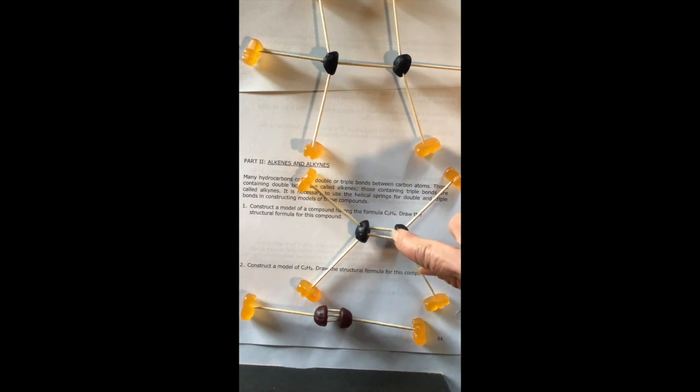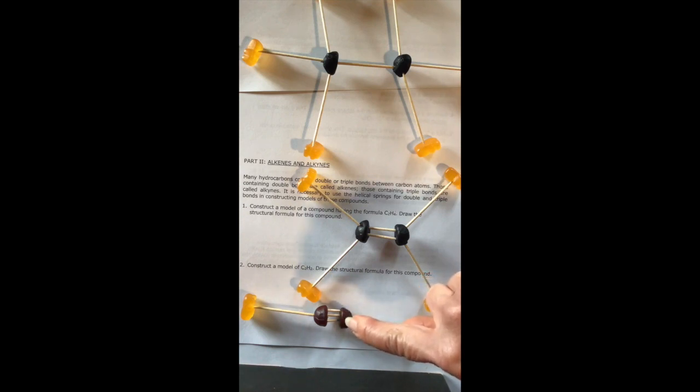Double bonds are always going to be shorter than a single bond and they're also going to be stronger. They also will hold your atoms in place. A triple bond is going to be even shorter and stronger than a double bond. So I took my toothpick and I cut it into even smaller parts to create a triple bond.